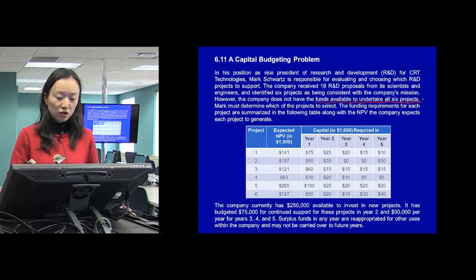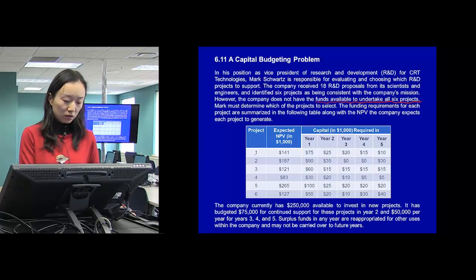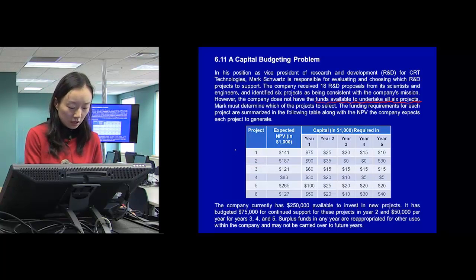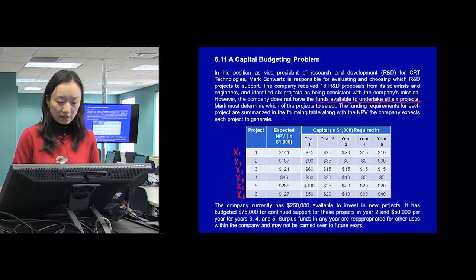And even though the decision is which ones to choose, we translate them into whether to choose project 1 or not, whether to choose project 2 or not, whether to choose project 3 or not. So we'll have those x1, 2, 3, 4, 5, and 6 representing whether to choose a project or not.